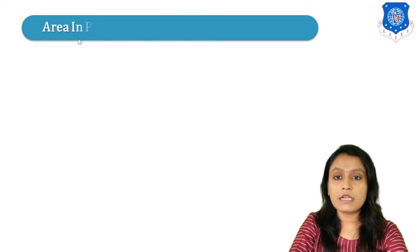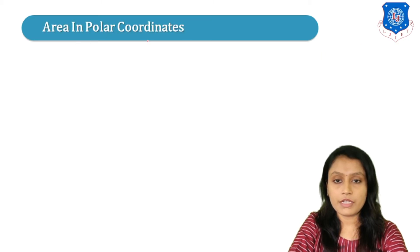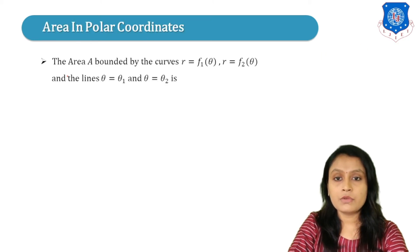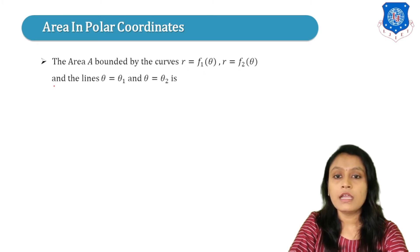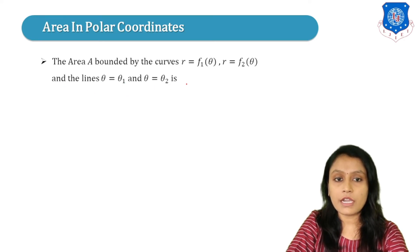Now we will study area in polar coordinates. The area A is bounded by the curves R equals F1(theta) and R equals F2(theta), and the lines theta equals theta1 and theta equals theta2.